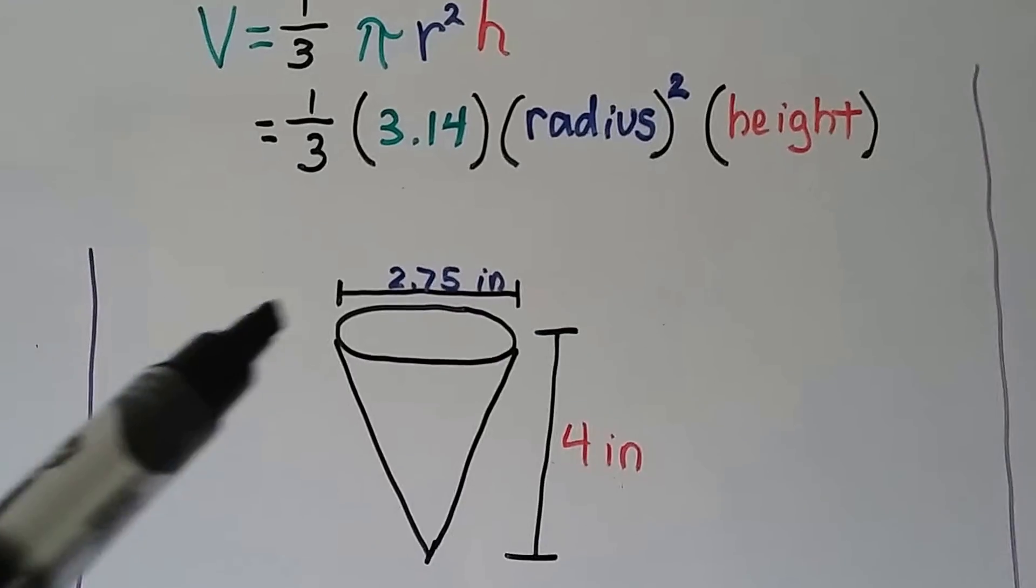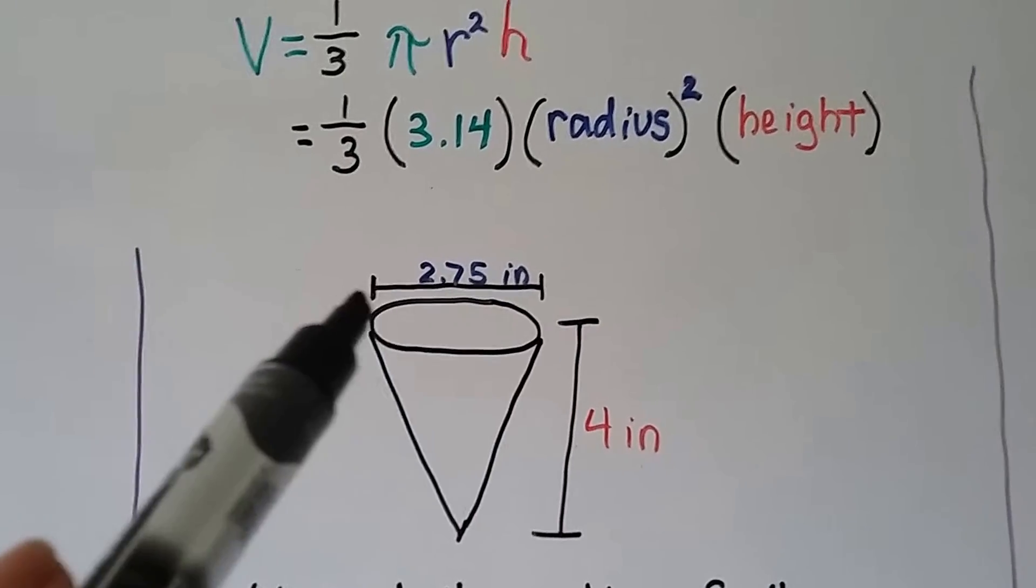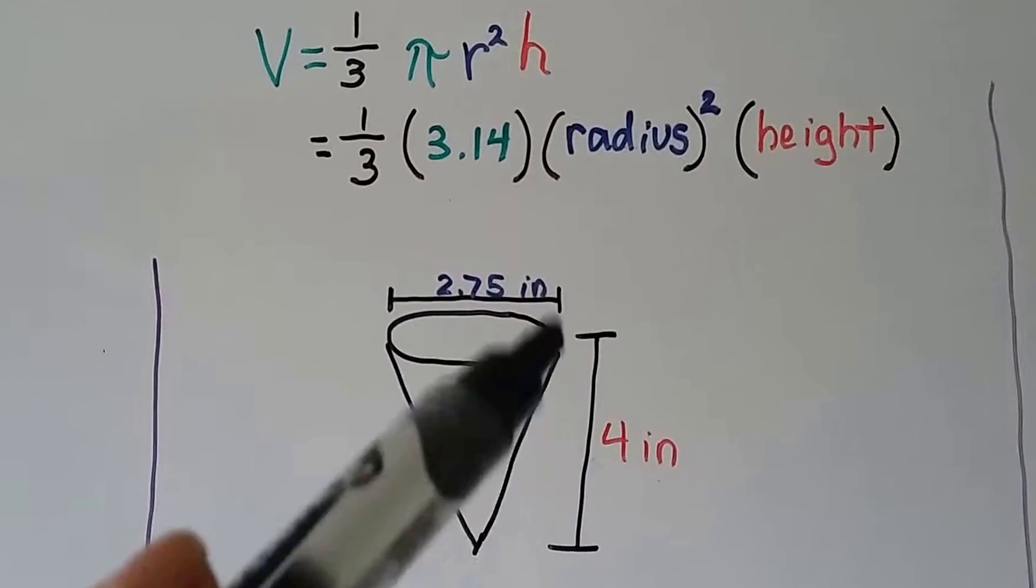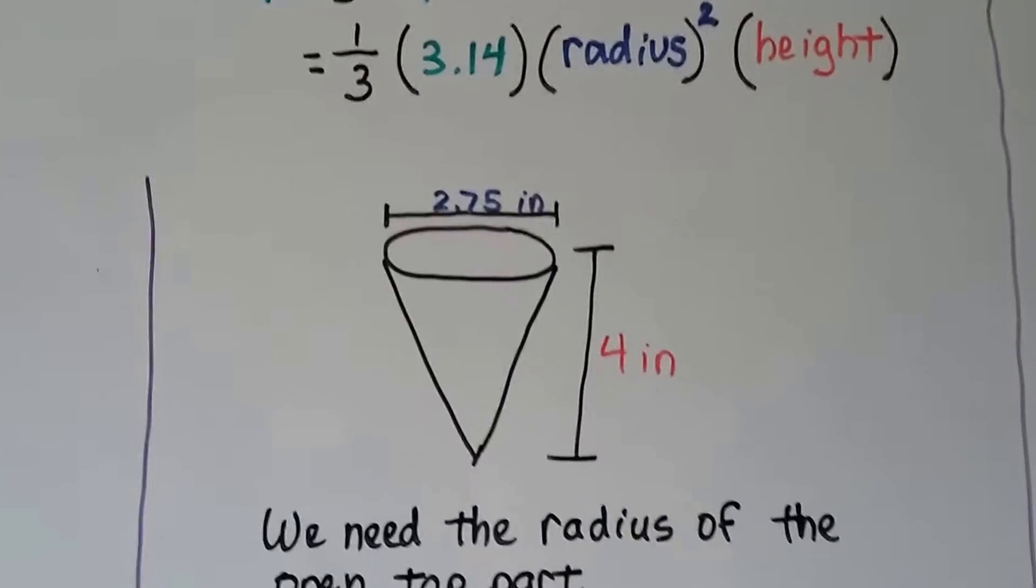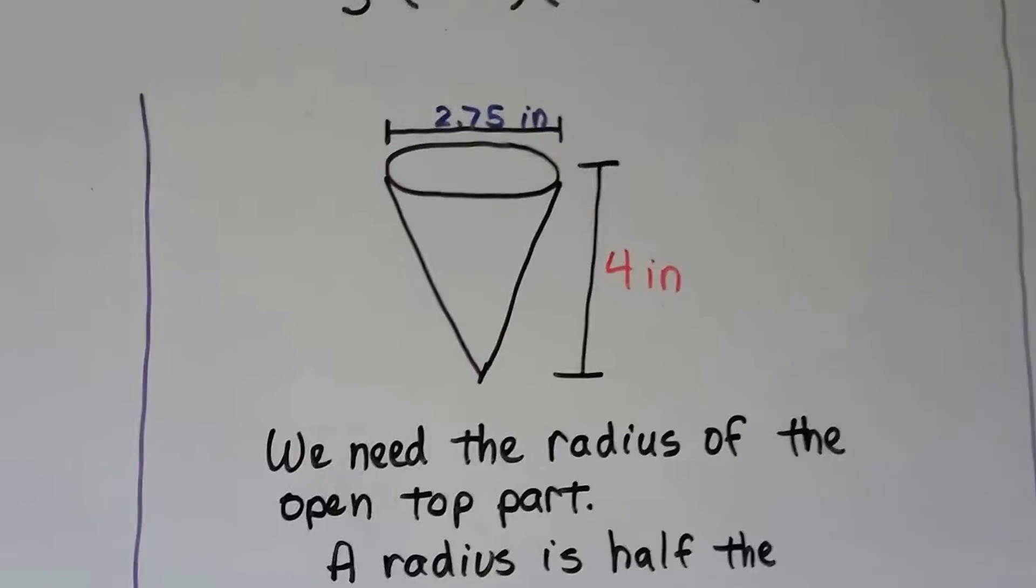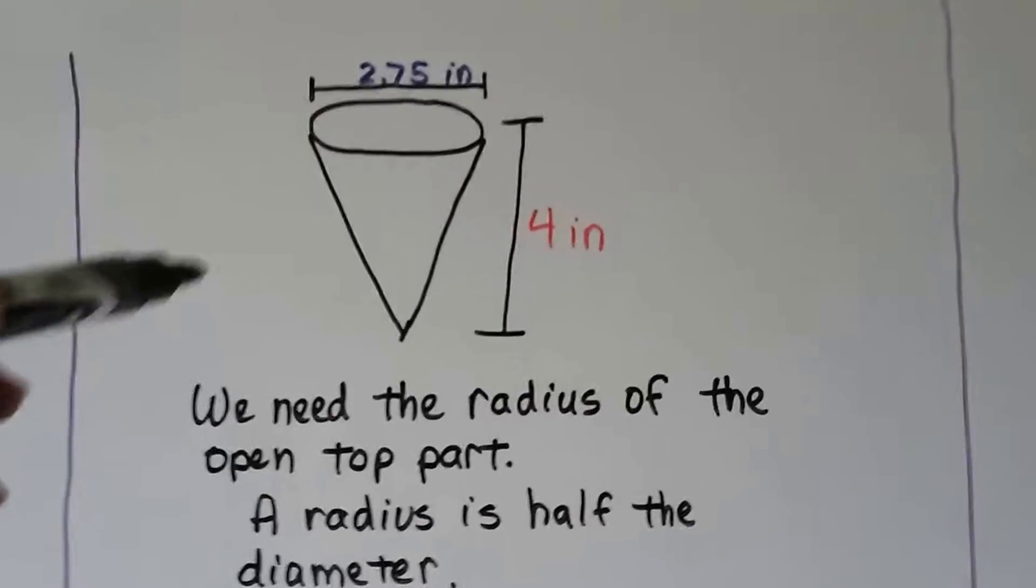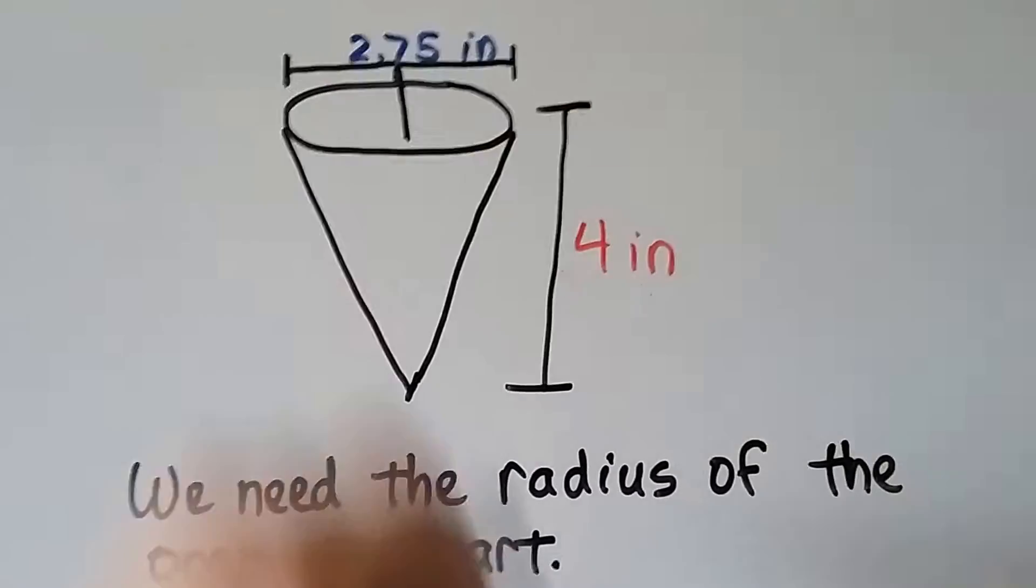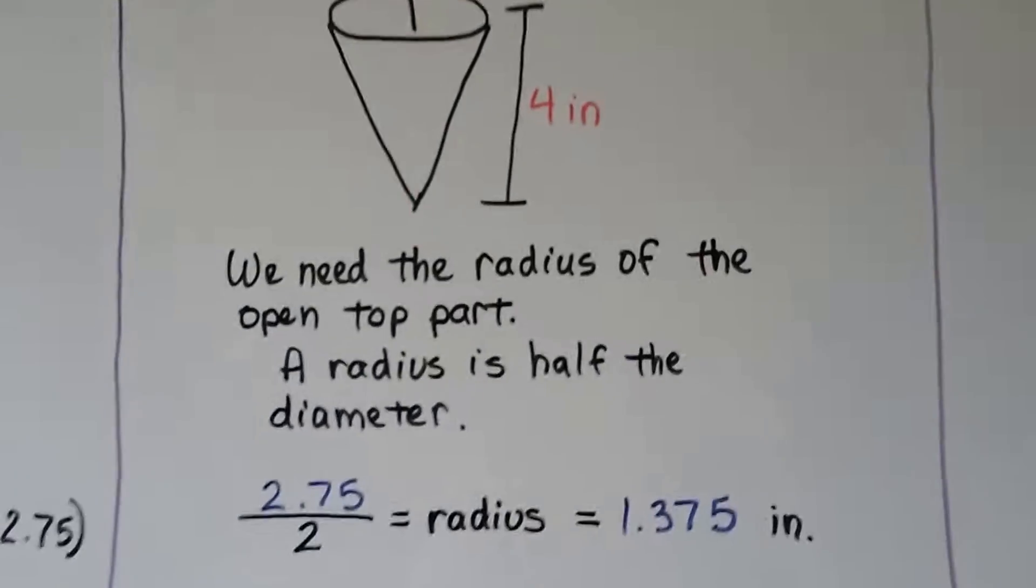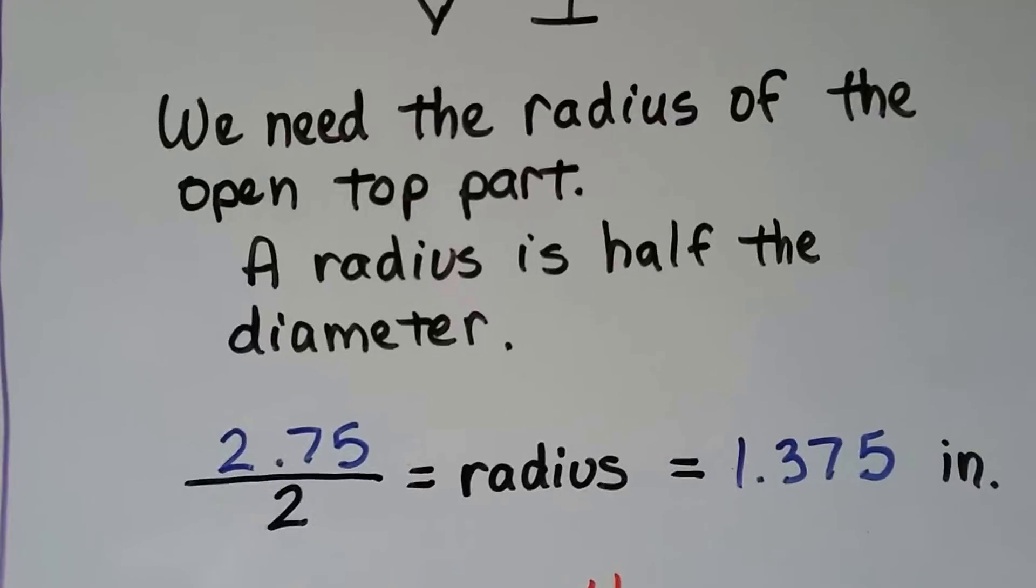We know that the diameter going all the way across is 2.75 and the height is 4. We need the radius of the open part, not the diameter. The radius is half the diameter, so that means we only need half of it.